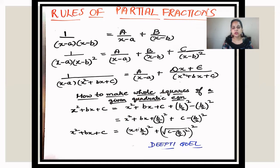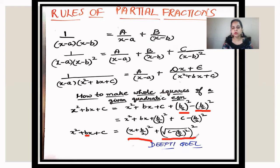To summarize completing the square: divide the coefficient of x by 2, add and subtract that squared value, and club the terms so the quadratic becomes (x plus B/2) squared plus (root of C minus B/2 squared) squared. Then check whether the sign between the two squares is positive or negative to decide whether to apply trigonometric or hyperbolic inverse Laplace formulas.